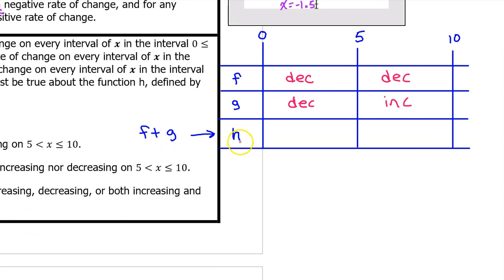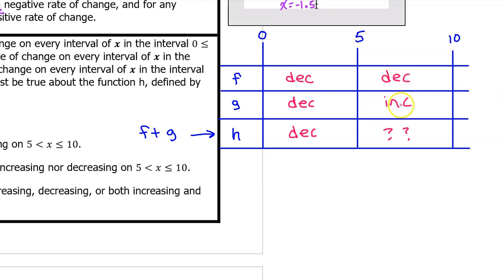Since h is f plus g, on the interval from 0 to 5 both f and g are decreasing, so h will definitely be decreasing. But on the interval from 5 to 10 we don't have enough information to tell whether h is increasing or decreasing. It depends on how much f is decreasing and how much g is increasing. If f decreases by 7 and g increases by 3, the decrease wins; if f decreases by 3 and g increases by 7, the increase wins. We just don't know.